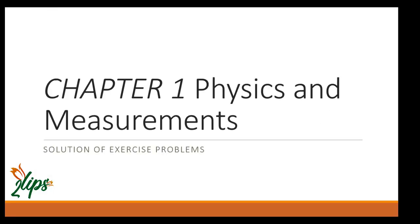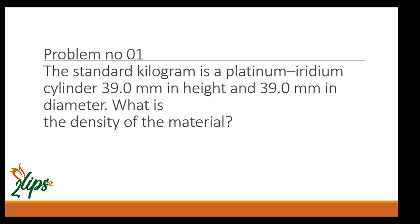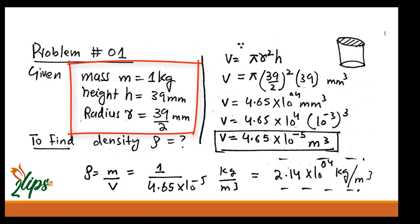The first chapter is physics and measurements, and this is the solution of exercise problems. The first problem: the standard kilogram is a platinum-iridium cylinder 39 millimeters in height and 39 millimeters in diameter. What is the density of this material? Let us first look at what information is given.